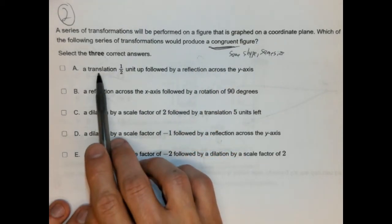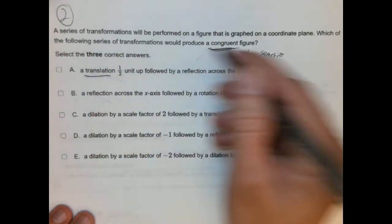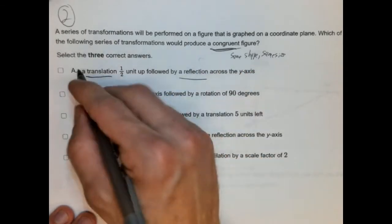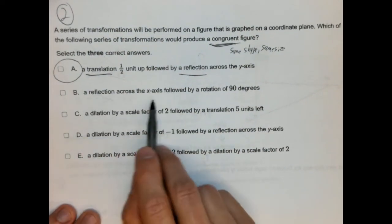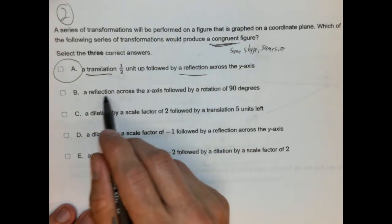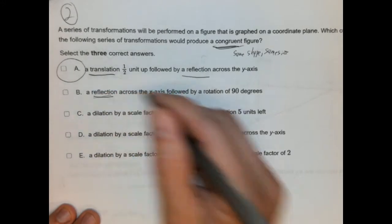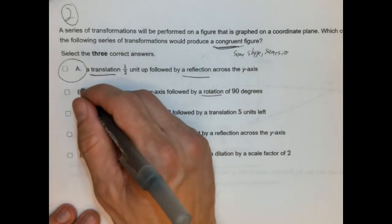So, there's only three correct answers. There's five to choose from. That means there's two that are not correct. So, we have to look for transformations that will not lose congruency. A translation of a halfing it up followed by a reflection across the y-axis. So, this is a shift. That's a flip. These both preserve congruency. Therefore, A is correct. A reflection across the x-axis followed by a rotation of 90 degrees. So, reflection is a rigid transformation as is a rotation. So, it's a flip and a twist. Congruency would be preserved.